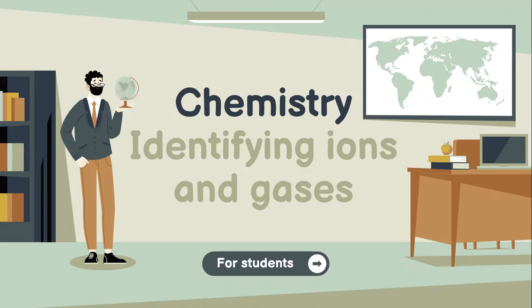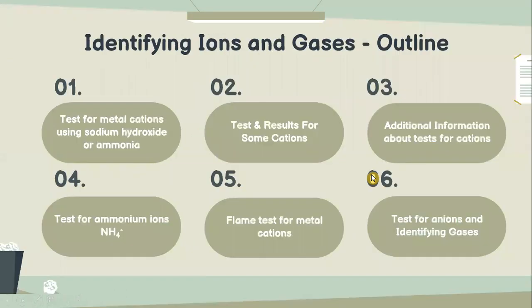Before further ado, let's look into what we have in our study outline. Our study outline comprises of test for metal cations using sodium hydroxide or ammonia, test and result for some cations, additional information about test for cations, test for ammonium ions, flame test for metal cations, and finally test for ions and identifying gases.